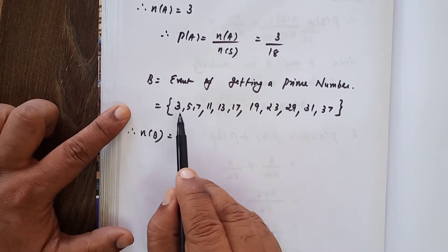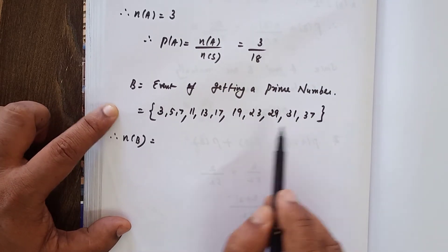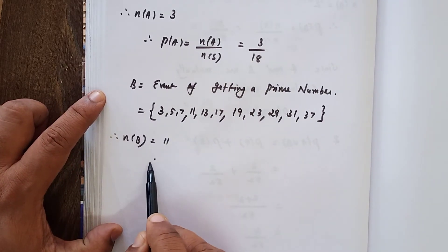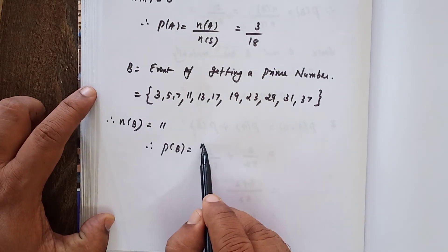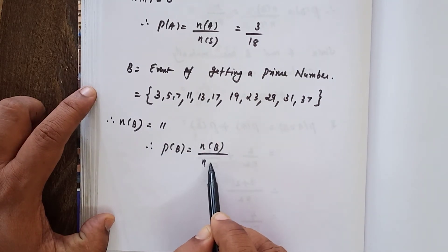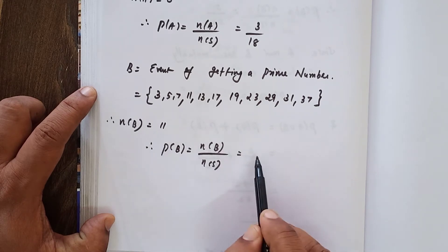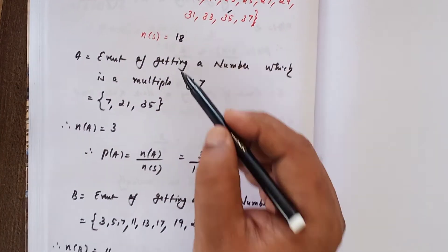Now n(B) that is equal to counting 1, 2, 3, 4, 5, 6, 7, 8, 9, 10, 11. Therefore, P(B) that is equal to formula n(B) divided by n(S). n(B) is equal to 11, n(S) is equal to 18.